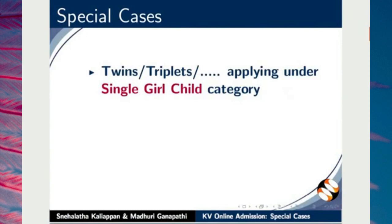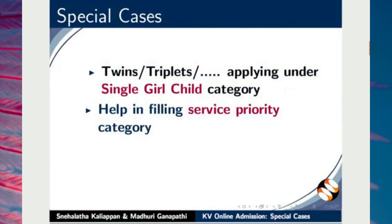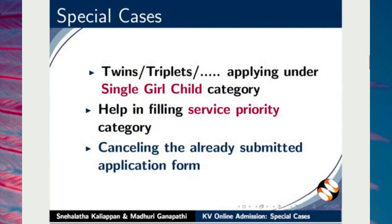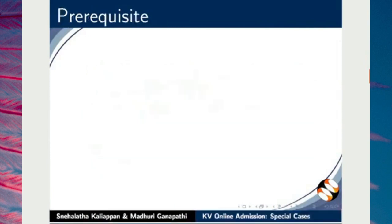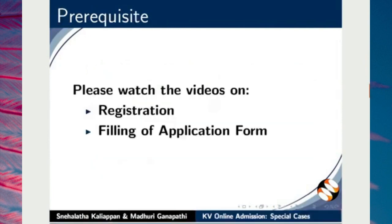Twins, triplets, quadruplets or similar siblings applying under single girl-child category. Help in filling service priority category. Cancelling the already submitted application form. As a prerequisite, please watch the previous videos on registration and filling of application form on KV Application Portal.